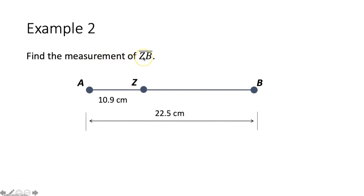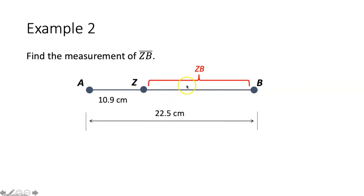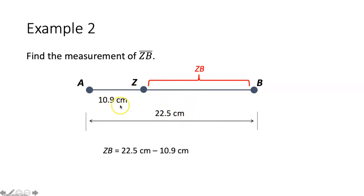Example two says find the measurement of segment ZB. The measure of ZB is found by taking the entire segment AB, which is 22.5 centimeters, and subtracting the measure of segment AZ, which is 10.9 centimeters. So 22.5 minus 10.9 gives us the measure of ZB, which is 11.6 centimeters. You try.